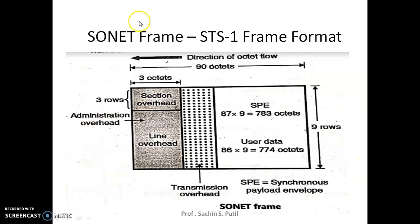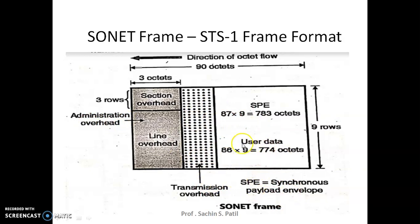This is the SONET STS-1 frame format, which consists of 9 rows and 90 columns. The first 3 columns are for overhead and the remaining 87 are for the payload envelope. You can see here the section overhead — first 3 rows × 3 columns — then the line overhead, administration overhead, and transmission overhead.